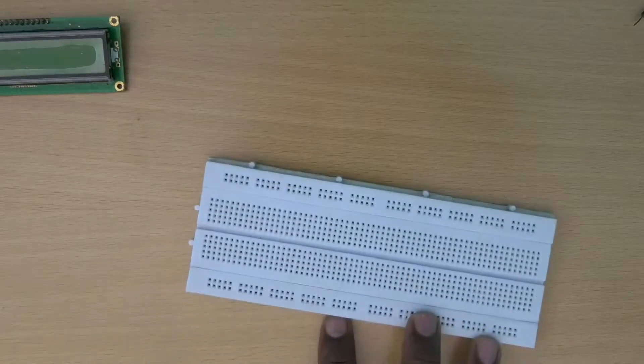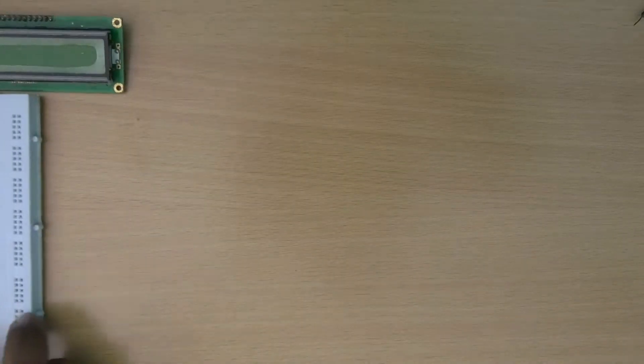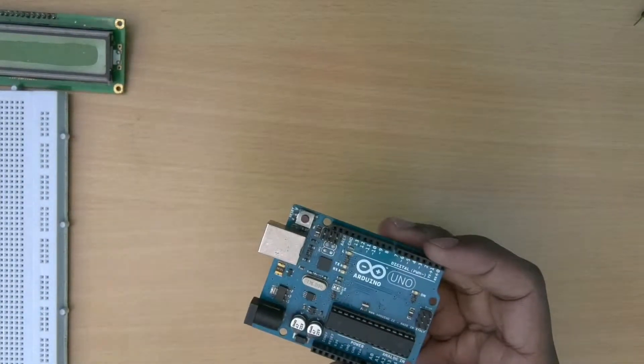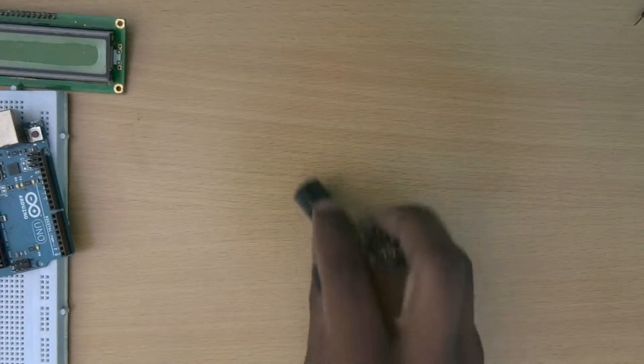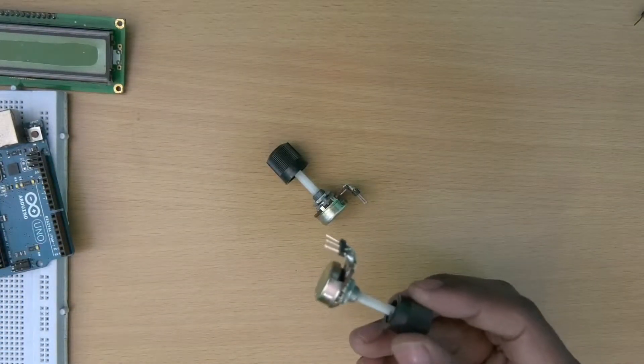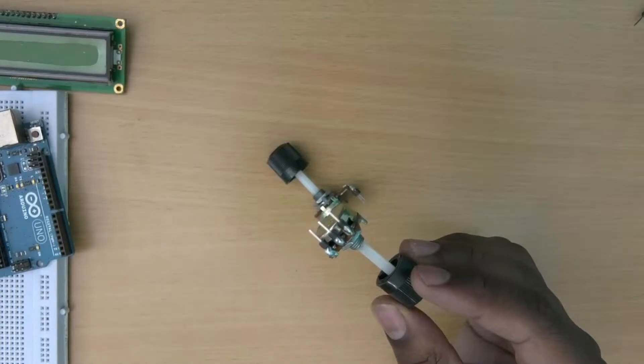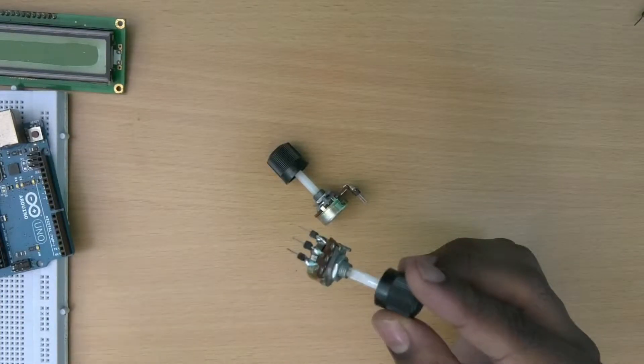We also need a breadboard, an Arduino board, 2 potentiometers with soldered header pins, and some jumper cables.